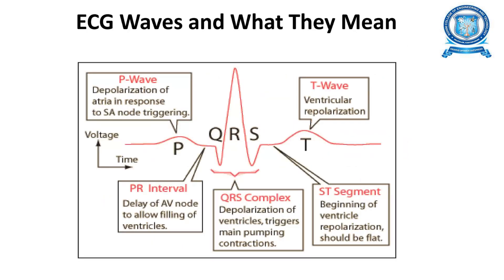The ECG waves and their meanings: the P wave represents depolarization of the atria in response to SA node triggering. The PR interval is the delay at the AV node to allow filling of the ventricles. QRS represents depolarization of the ventricles, triggering the main pumping contractions. The T wave represents ventricular repolarization, and the ST segment marks the beginning of ventricular repolarization and should be flat.